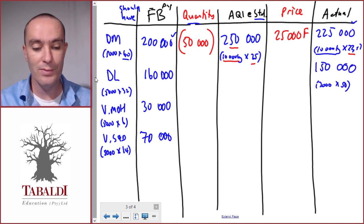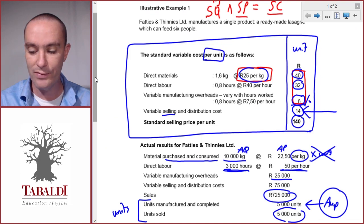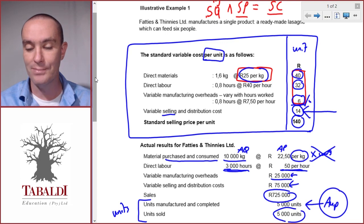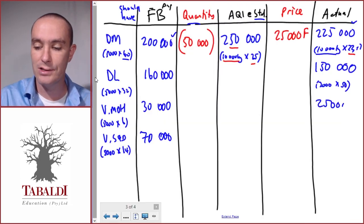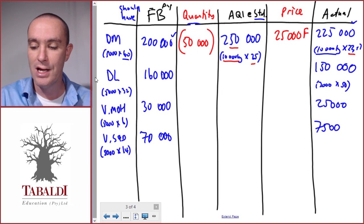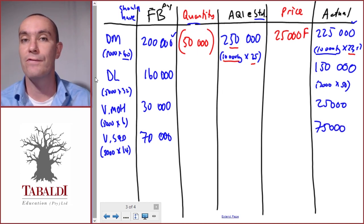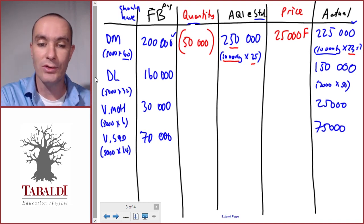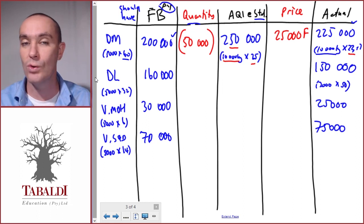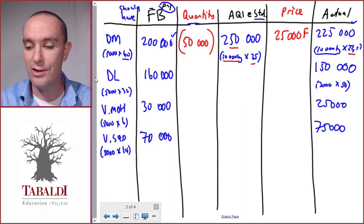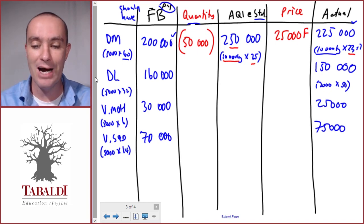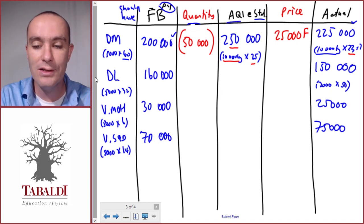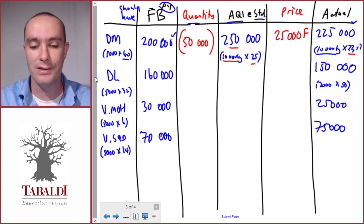Variable manufacturing overheads actual was given as 25,000, and variable selling and distribution actual was 75,000. Using the table you fill in the flexible budget first for all costs — making sure to use actual units produced — then simply write in the actual values from the given information. Now the tricky part: the middle column, actual quantity of input at standard price.